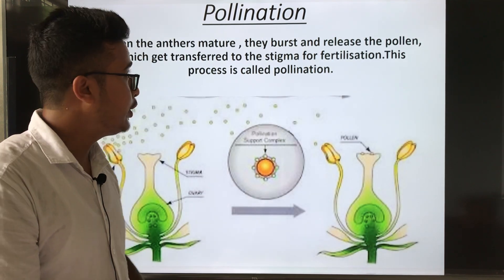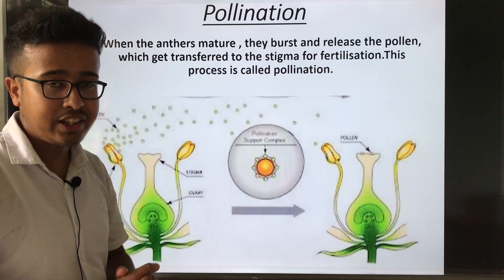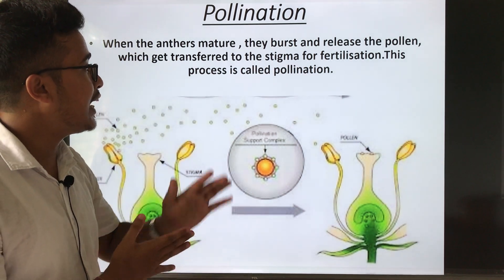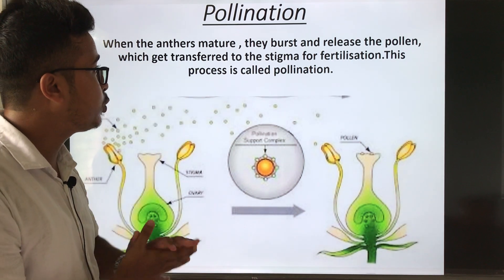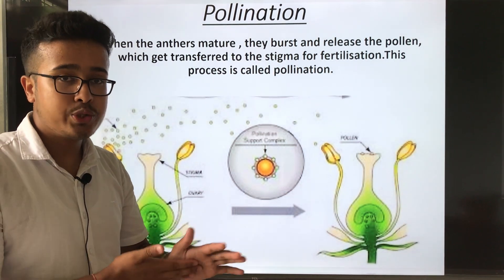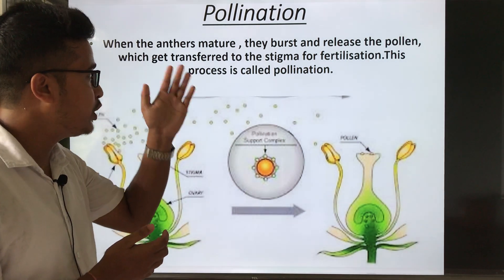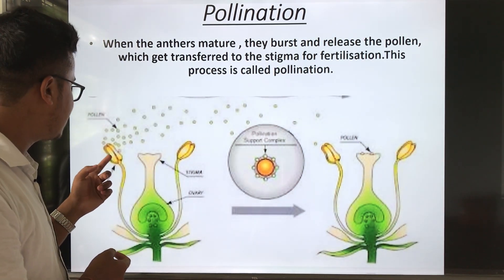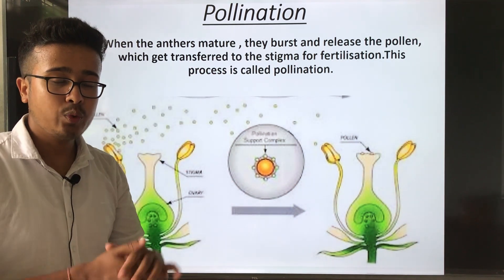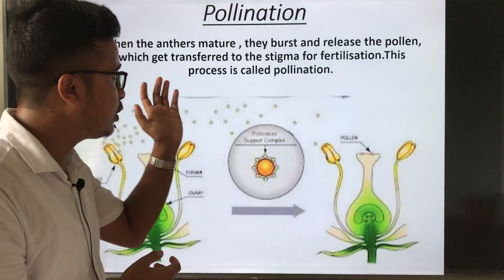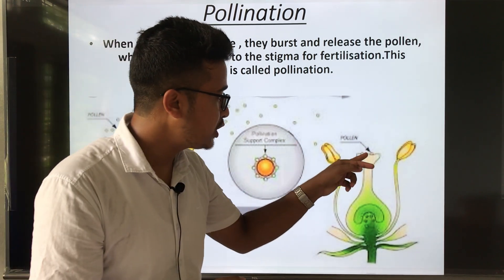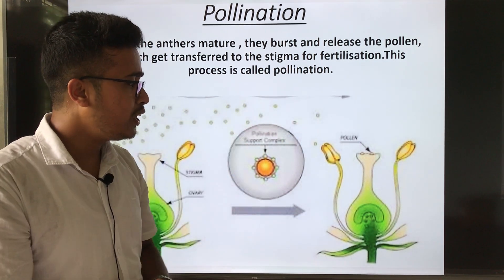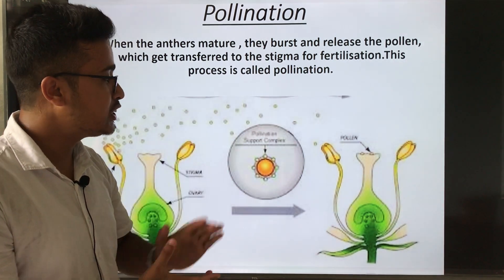Now, pollination. When the anther matures, it bursts and releases the pollen, which gets transferred to the stigma for fertilization — this process is called pollination. The anther, which is the male sex organ, contains pollen. When the anther bursts, the pollen grains spread out, get transferred to the stigma (female sex organ), and fertilization occurs.